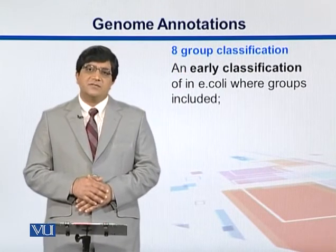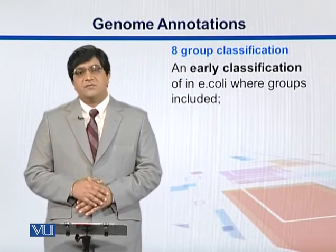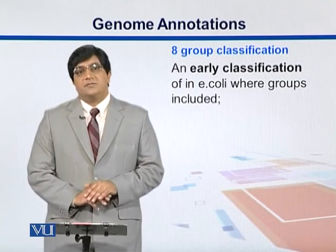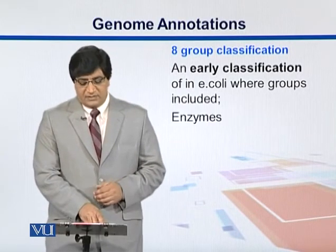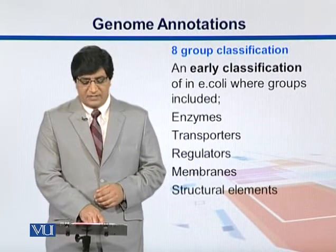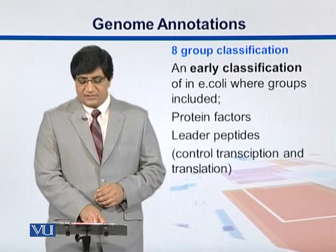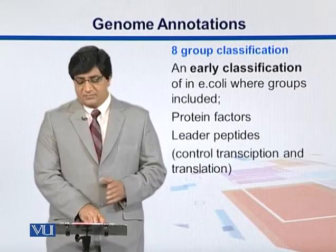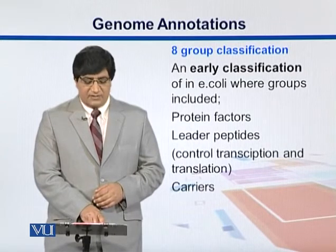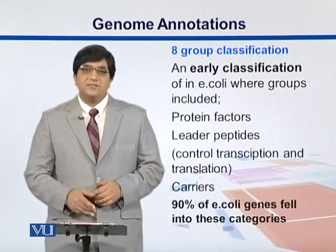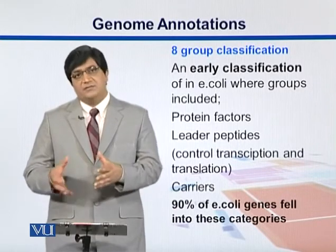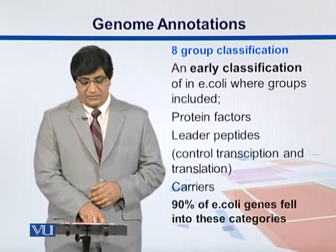There are different classification schemes for functional classification. One is an eight-group classification, which classifies genes and their products into groups: enzymes, transporters, regulators, membranes, structural elements, protein factors, leader peptides — which control transcription and translation — and carriers. Scientists have found that 90% of E. coli genes fit into these categories, so their annotations can be explained.